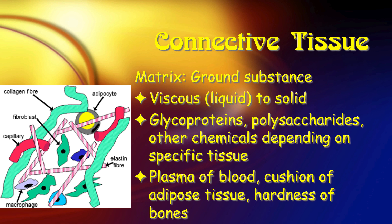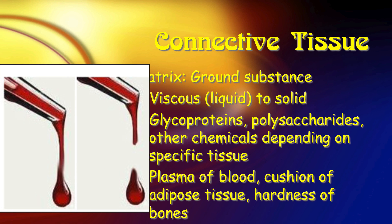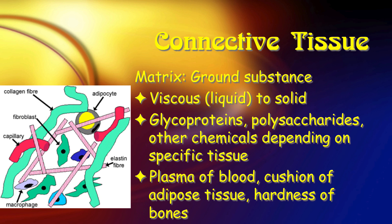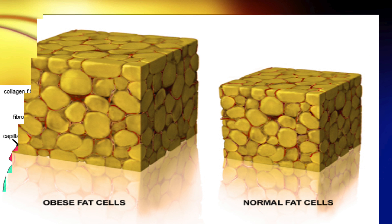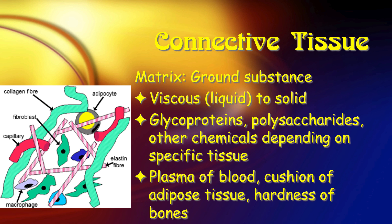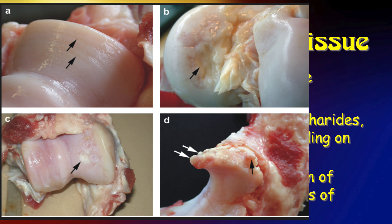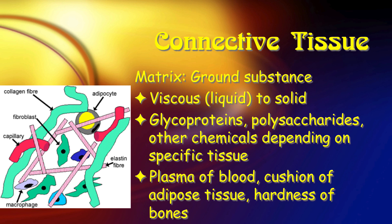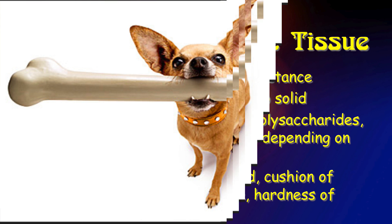An example of a tissue with a liquid ground substance is blood. Blood is a tissue because it has cells in it, and the plasma is our ground substance. In adipose tissue, it's a little more solid — it's more like jello, kind of. And we get to cartilage, and it's getting much firmer, and bone is just hard.